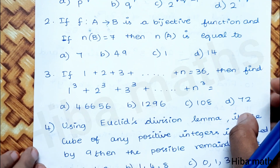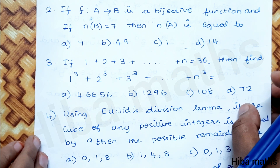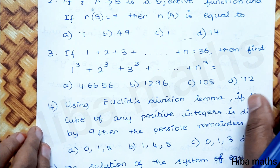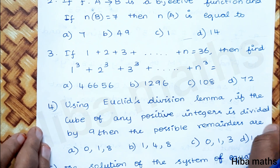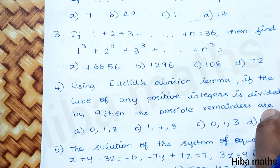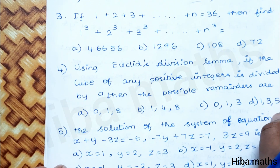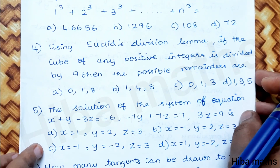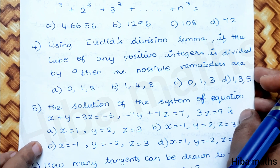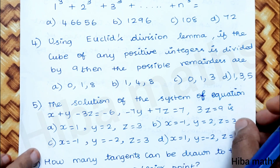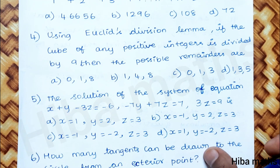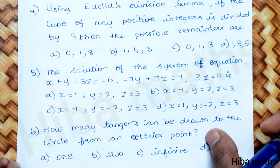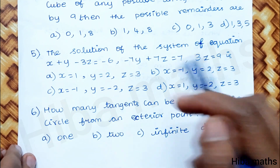Third question: if 1 plus 2 plus 3 up to n is equal to 36, what is n cubed? Fourth question: using Euclid's division, if the cube of any positive integer is divided by 9, find the possible remainders.